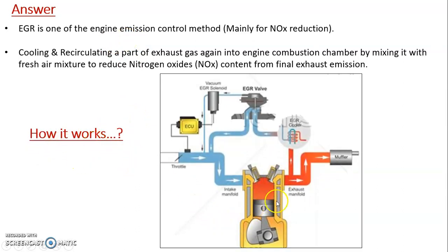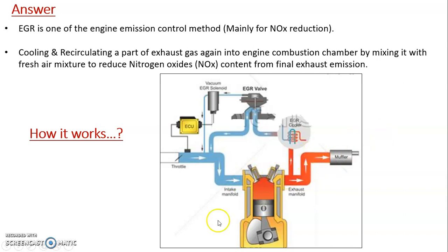Now we will see how it works. This is a cutout section of an engine cylinder. This is the cylinder, this is the piston moving up and down — this is basically a four-stroke engine, as tractors and automobiles mainly have four-stroke diesel engines, which are compression ignition engines. You can see the intake valve and the exhaust valve. From the intake valve, fresh air comes in; from the exhaust valve, whatever burnt gas is there after combustion goes out. After combustion, this exhaust valve opens and exhaust gas comes out of this port and goes towards the exhaust muffler and final exhaust pipe.